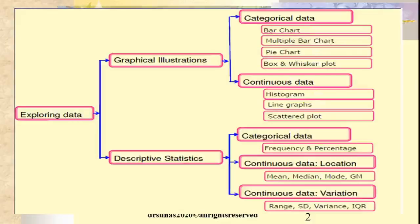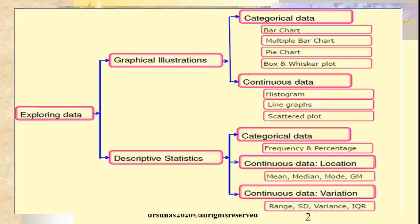Whenever we have any research question, we can always select various methods of statistics based on it. It is not always that we should select inferential statistics like the t-test, ANOVA, Wilcoxon test, or Mann-Whitney test. In fact, the selection of the test depends upon your research question. Even simple descriptive statistics — like representing your data as mean, standard deviation, or range — can be equally effective in expressing or concluding your research. It is the research question which decides the type of statistical test to be selected.